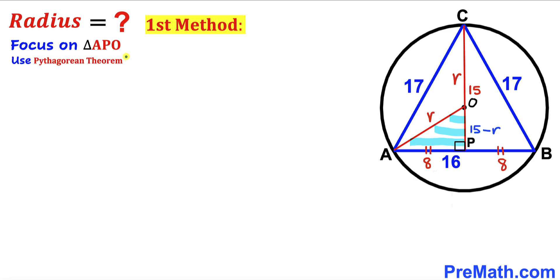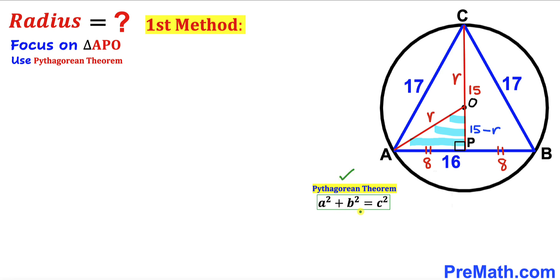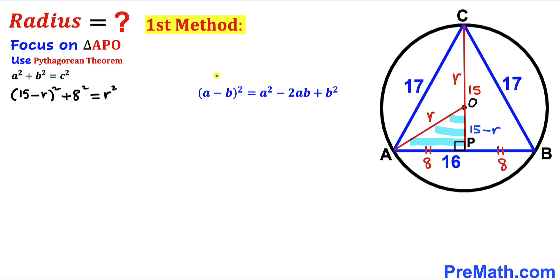We apply the Pythagorean theorem on triangle APO, whose legs are (15 − r) and 8, and hypotenuse is r. So: (15 − r)² + 8² = r². Expanding using the identity (a − b)² = a² − 2ab + b², we get 225 − 30r + r² + 64 = r².